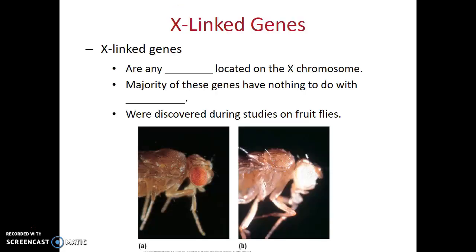Now it turns out that there are a lot of genes on the X chromosome, not just those that affect sex-specific features. And so we call these genes X-linked genes — any genes that are located on that X chromosome. It actually turns out that the majority of these genes have nothing to do with sex at all. They were first discovered during studies on fruit flies.